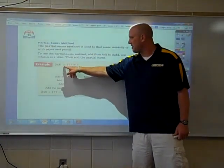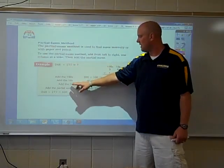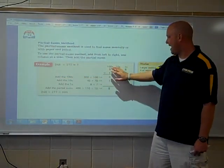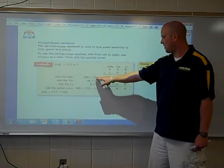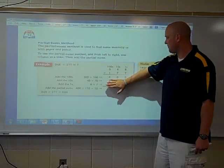So you have 348 plus 177. And what they tell you to do with the partial sum method is to add the place values. So you have 300 and 100 in here. When you add them together, you get 400.